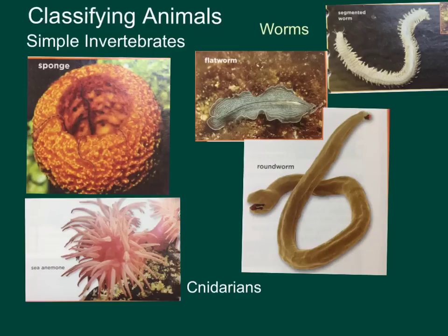Let's start with sponges. Sponges have no true organization at all. They're the only animals without real tissues or organs, and they are asymmetrical. Asymmetrical is a body plan that cannot be divided into mirror images — no matter how you cut it, if you showed its reflection in a mirror, it would not look the same.